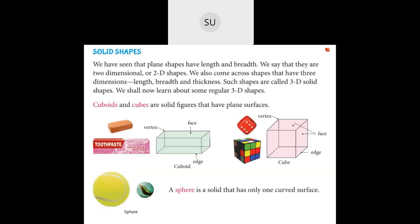We will learn about some regular 3D shapes: cube, cuboid, sphere, cone, and cylinder. Cuboids and cubes are solid figures that have plane surfaces. A toothpaste box or a brick represents a cuboid.